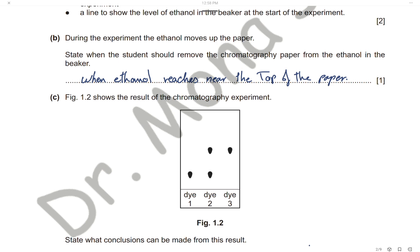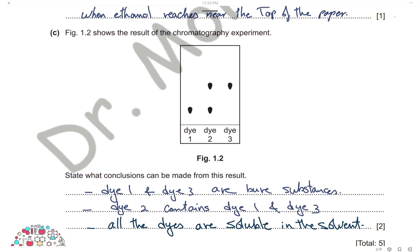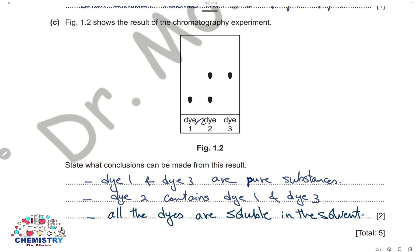Figure 1.2 shows the results of the chromatography experiment. Dye 1 has only one spot, so dye 1 is pure. Dye 3 also has one spot, so dye 1 and dye 3 are both pure substances. Dye 2 has two spots — the first spot is the same distance as dye 1, and the second has the same distance as dye 3, so both dye 1 and dye 3 are present in dye 2. All three dyes are soluble in the solvent.